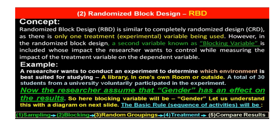The basic four steps are the same as in the previous method — sampling, random groupings, treatment, and compare results. In this method, one additional step is introduced: blocking. That is step number two. This additional element of blocking is why this method is called randomized block design.